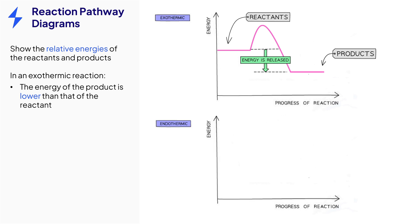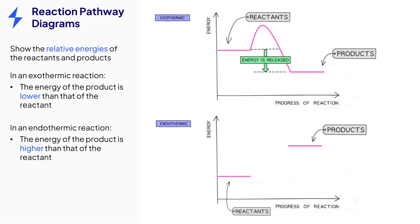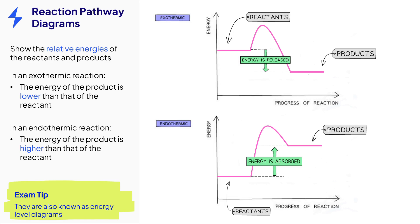For an endothermic reaction, energy is taken in from the surroundings, so the product will have more energy than the reactant. Again, the initial rise in energy represents the activation energy, and the difference between the energy of the products and the reactants is the overall energy change. This time the arrow points upwards, showing that energy has been absorbed. You can sometimes see reaction pathway diagrams referred to as energy level diagrams.